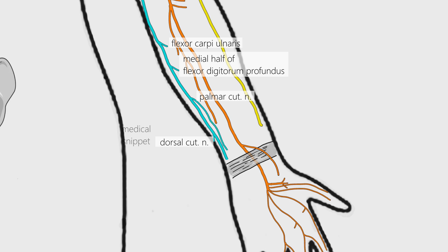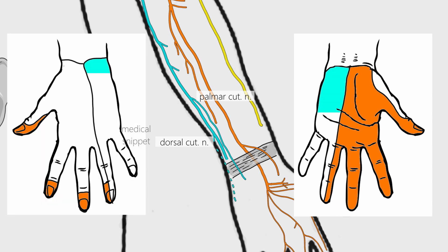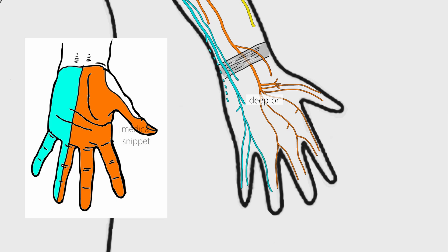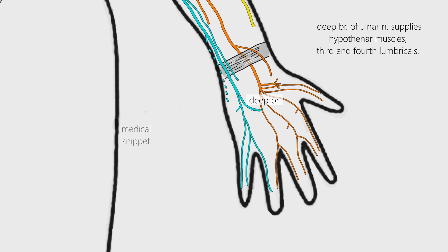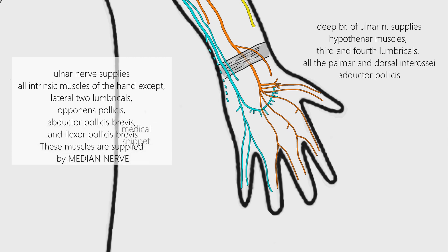The palmar cutaneous branch enters the hand and supplies the skin over the hypothenar eminence. The dorsal cutaneous branch enters the dorsum of hand and supplies the dorsal surface of the medial one and a half fingers and the associated dorsal hand area. The ulnar nerve then enters the hand superficial to the flexor retinaculum. In the hand it terminates into superficial and deep ulnar branches. The superficial branch supplies palmaris brevis and gives digital branches to the medial one and a half fingers. Deep branch supplies hypothenar muscles, third and fourth lumbricals, and all the palmar and dorsal interossei muscles, and terminates by supplying adductor pollicis. Ulnar nerve supplies all intrinsic muscles of the hand except lateral two lumbricals, opponens pollicis, abductor pollicis brevis, and flexor pollicis brevis, which are supplied by median nerve.